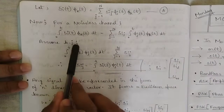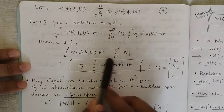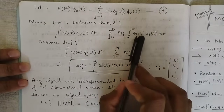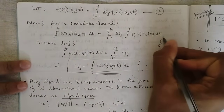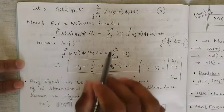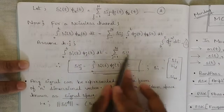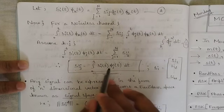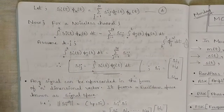If we set K equal to J, we get: integral from 0 to T of SI(T)·φ_J(T)dT = summation from J=1 to N of SI_J, because φ_J(T)·φ_K(T) becomes φ_J²(T). We know that the integration of the square of an orthonormal basis function equals 1, so the final summation gives summation of SI_J. Therefore, SI_J = integral from 0 to T of SI(T)·φ_J(T)dT, where J ranges from 1 to N.